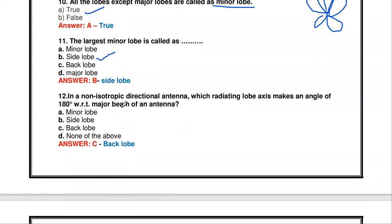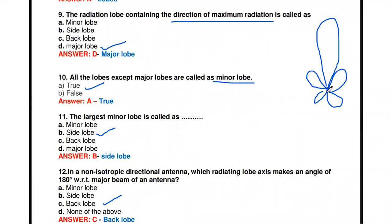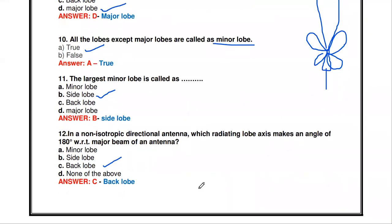In a non-isotropic directional antenna, which radiating loop axis makes an angle of 180 degrees with respect to the major beam? The answer is the back loop. So opposite to the major loop at 180 degrees, we get a minimum amount of radiation, and this is called the back loop.